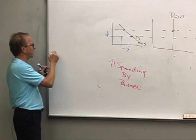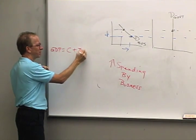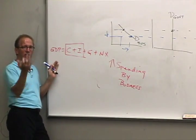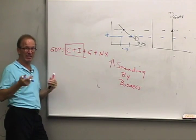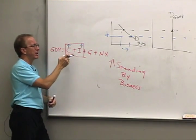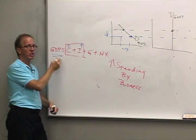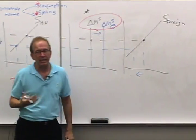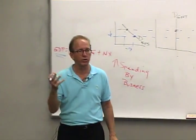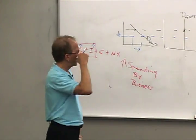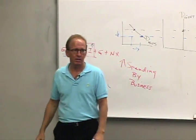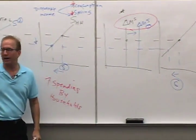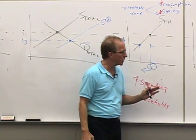That stimulates the economy. Another thing that happens is there are fewer capital inflows now that interest rates are lower — foreigners don't find this such a great place to lend money. Here's number four and five and six: increased investment spending is number four, increase in consumption spending is number five, and reduced capital inflows is number six.